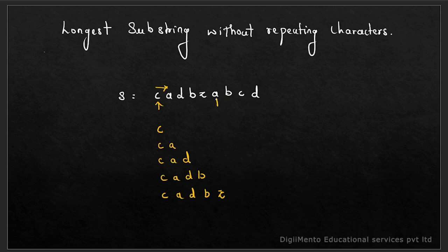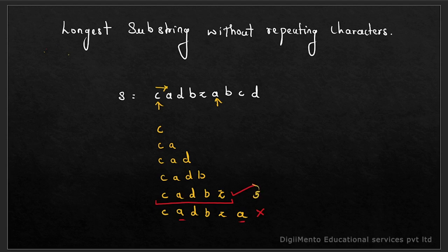Can we add A next, making C-A-D-B-Z-A? No, this is not correct because A and A are repeating — these are not unique characters. That is why we will not consider this as the longest substring. But up till C-A-D-B-Z, can we say this is the longest substring without repeating character? Absolutely yes. The length is 1, 2, 3, 4, 5 — and this is our answer. But we have to check all possible starting positions.